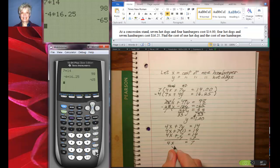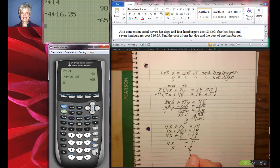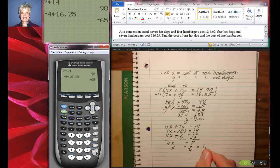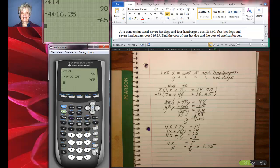So x equals 7 fourths, but that's not the way we do money. So this is going to be 1.75, I believe. Let's double check: 7 divided by 4. Yes, $1.75.